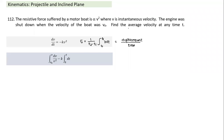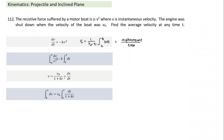To find displacement we need to integrate twice. At time t equals zero, velocity is v-naught; at time t, velocity is v. We get dv/v² = −k dt. Integrating, we get 1/v = 1/v-naught + kt, which gives v = v-naught / (1 + kt). Once we have velocity, we write it as dx/dt and integrate again to get displacement x.